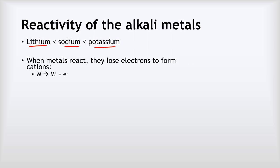Now, whenever metals react, they always lose electrons to form cations. And we can see that described here where a metal becomes a metal cation, M+, and the electron that it's just lost.